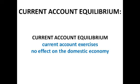Current account equilibrium occurs when the current account has absolutely no effect on the domestic economy — it doesn't matter how much we're importing or exporting, it has no effect on the economy back home. Basically it means it's balanced: imports are equal to exports, and this leads to a much greater level of stability in the economy.